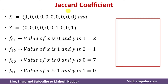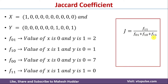Now we will calculate the Jaccard coefficient. To calculate the Jaccard coefficient, we need the same four variables, which we have already computed. The Jaccard coefficient formula is: J = F11 / (F01 + F10 + F11). Substituting the values, the final Jaccard coefficient is equal to 0.